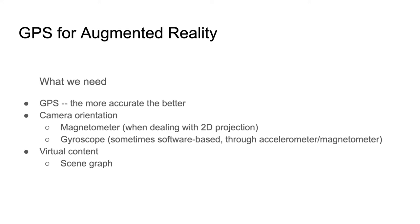For more elaborate use cases you may need to know the actual orientation of the device itself, in which case we use a gyroscope. Gyroscopes can be implemented through different means — some use accelerometer and magnetometer signals to work out the 3D orientation of the phone, while some have an actual electronic gyroscope built in. You also need some sort of management for virtual content to augment the 3D space, using a scene graph that defines the relationships between all virtual objects placed in the scene.